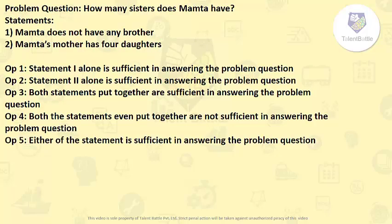Problem: How many sisters does Mamta have? Statements: First, Mamta does not have any brother. Second, Mamta's mother has four daughters. This is a data sufficiency example — we need to find which statement is enough to answer the question. Considering only the first statement, that Mamta does not have any brother, this does not give any idea about how many sisters she has.